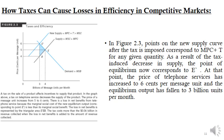Suppose the government levies a 2-cent per message unit tax on sellers of long-distance service. Sellers must now cover not only the marginal social cost of each unit but also the 2-cent tax. The effect of the tax is to decrease supply, as the price required by producers to expand service by one unit equals the sum of the marginal private cost and the tax per unit. As a result, the supply curve shifts to the left, reflecting the reduction in supply due to the new tax.